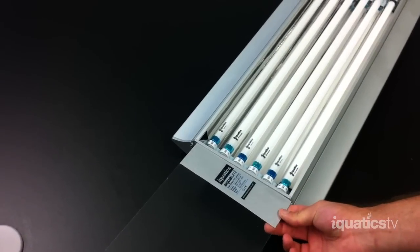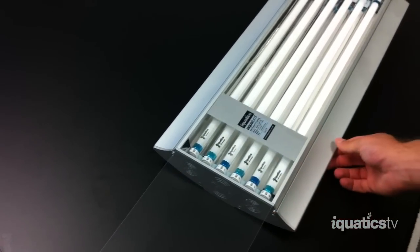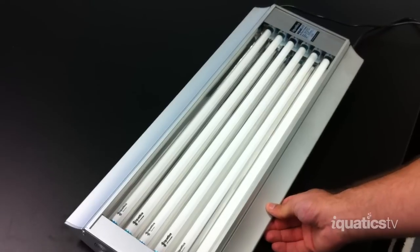Slide the sheet into the slots on the Aqualumi starting with the end of the specification sticker. Make sure you push it all the way to the end of the light unit.